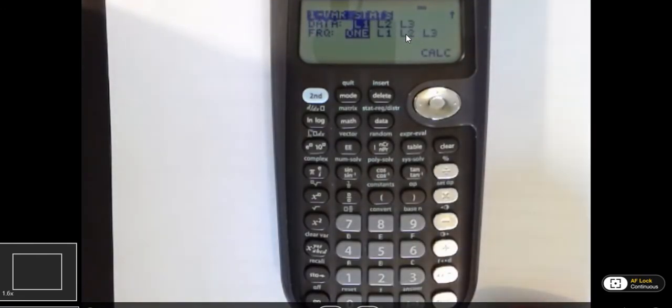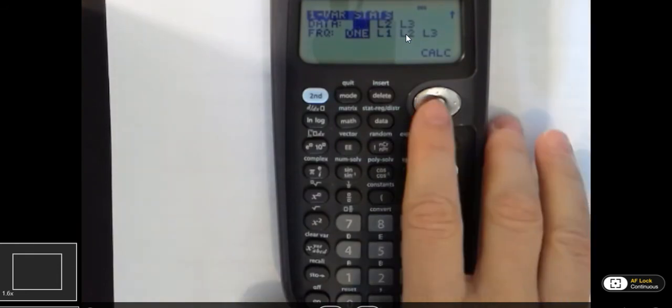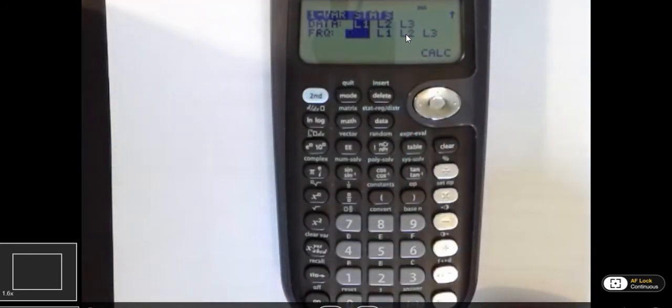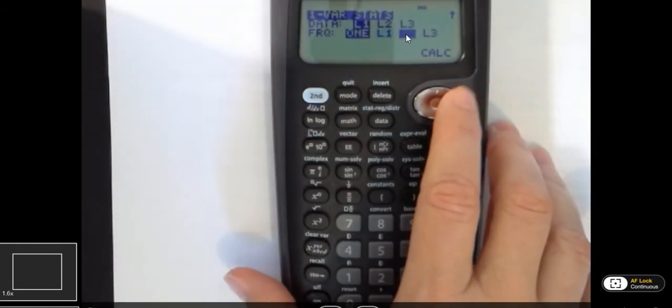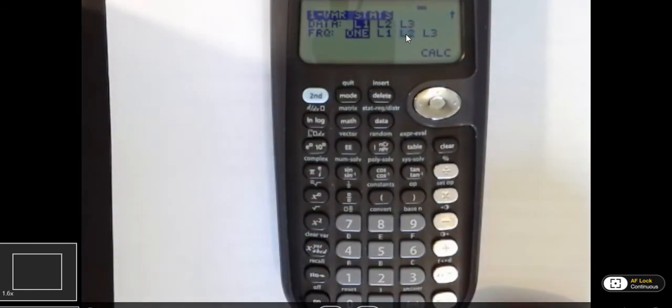So it's saying your data is in L1. Is that what you want? And I do want that because that's where I put that initial data. Then it says, what about your frequency? Is it 1? Well, it's not 1 because I had different frequencies for each class. And where I put that frequency was in the second column, which is L2. So I want it to look at the data in L1 and the frequencies in L2. So I'm going to hit enter.